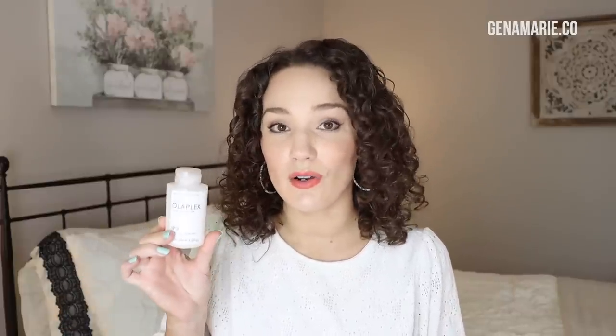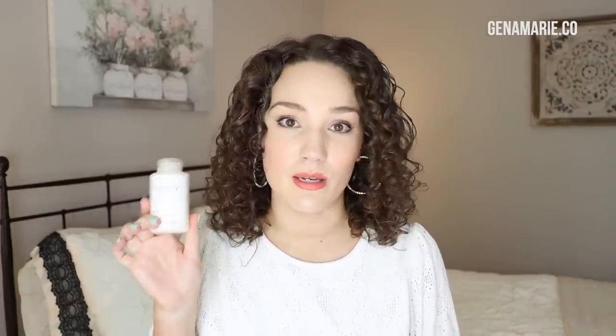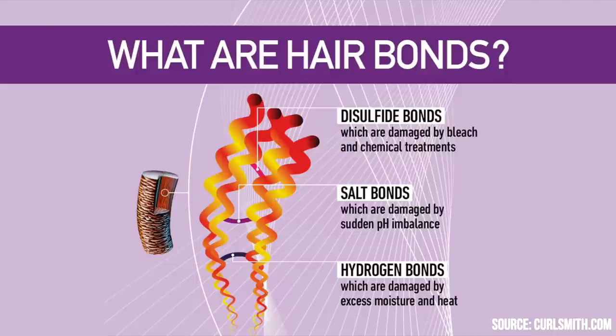Olaplex was originally used in the salon when people were getting their hair highlighted or lightened to help keep it strong and recover from chemical processing treatments. Bond Curl is different — it targets three different types of bonds in our hair: disulfide bonds (damaged from chemicals), salt bonds (damaged from a sudden change in pH), and hydrogen bonds (damaged from water and heat).